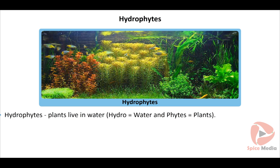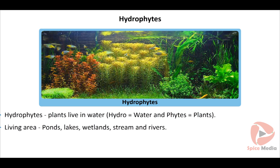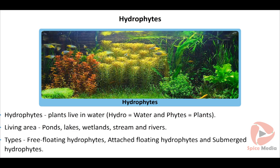Hydrophytes means plants that live in water. 'Hydro' means water and 'phytes' means plants. These plants live in water bodies like ponds, lakes, wetlands, streams and rivers. They are divided into three types: free floating hydrophytes, attached floating hydrophytes, and submerged hydrophytes.